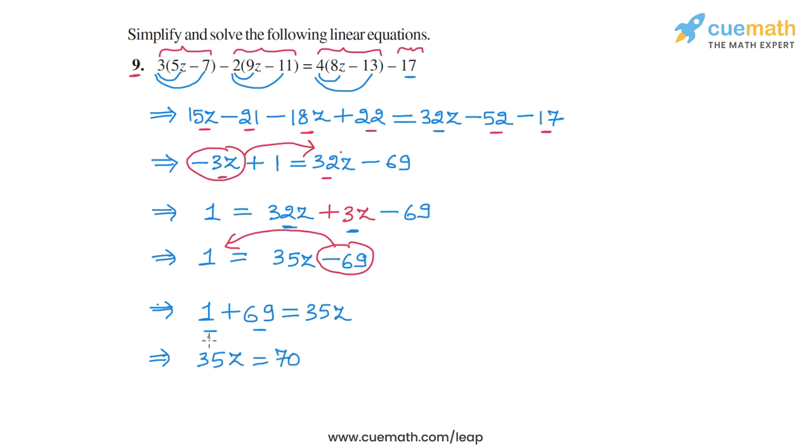And finally, we need to divide both sides of the equation by 35 to get rid of this 35 on the LHS. If we do that, we will get z is equal to 70 by 35.